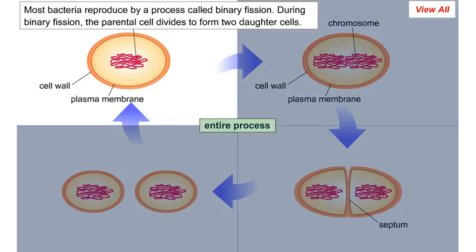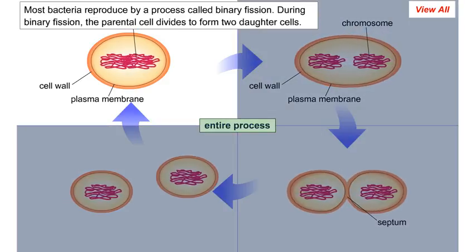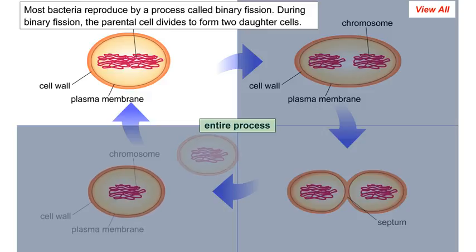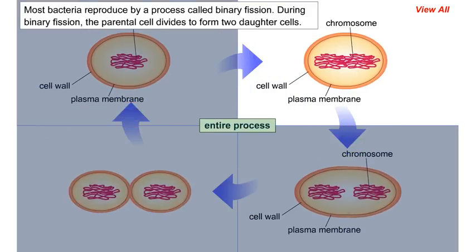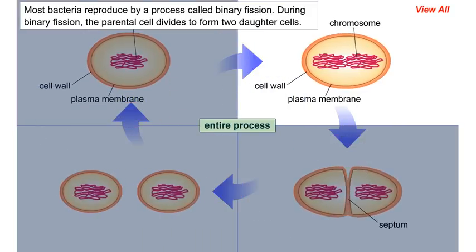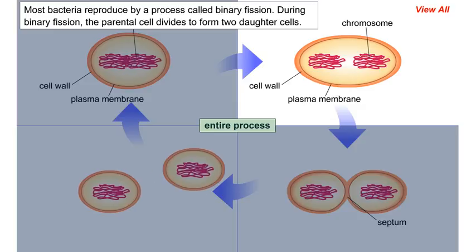Most bacteria reproduce by a process called binary fission. During binary fission, the parental cell divides to form two daughter cells.